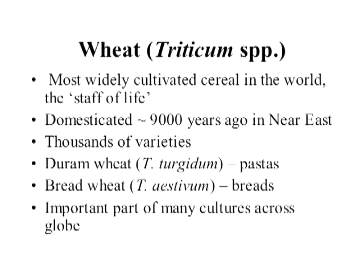While rice feeds more people worldwide, wheat is actually the most widely cultivated cereal in the world, also known as the staff of life. It was domesticated about 9,000 years ago in the Near East, and like rice, there are thousands of varieties and a couple of different species. Durum wheat, Triticum turgidum, is used for making pastas, while bread wheat is a different species used to make breads.